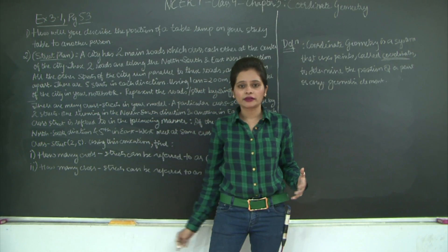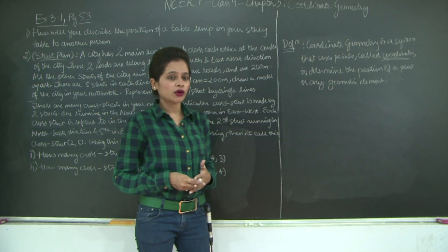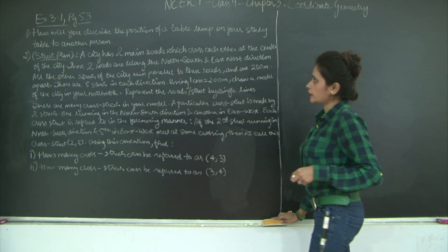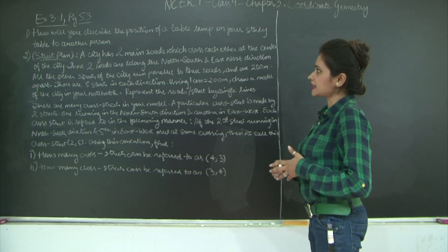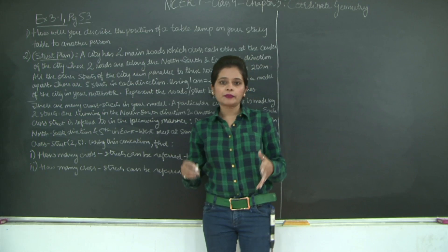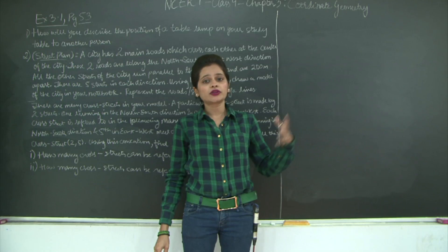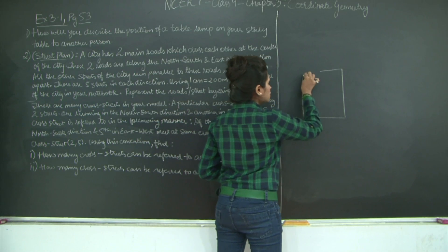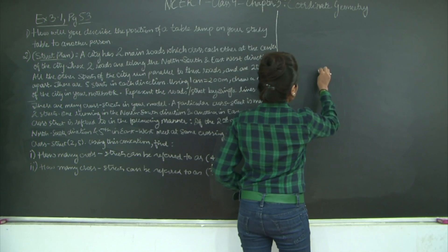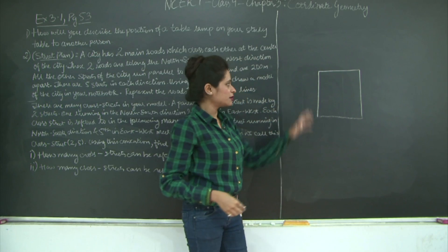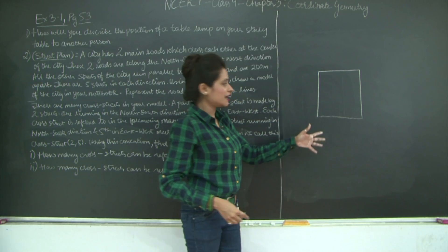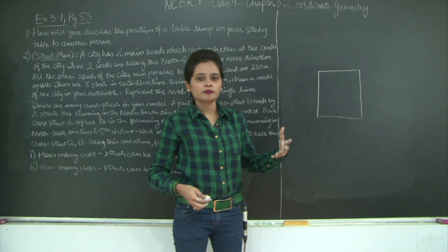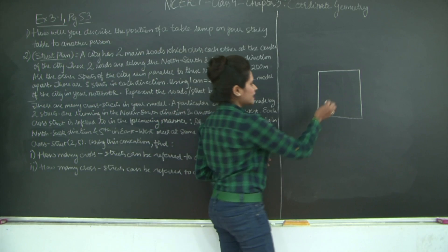Let's get started with exercise 3.1. The first question: how will you describe the position of a table lamp on your study table to another person? This example is similar to finding the location of a point with respect to a paper. So instead of the paper, this is your study table — I'm not drawing the legs since the lamp is placed on the tabletop — where you keep your books, pens, pencil stand, and your table lamp.